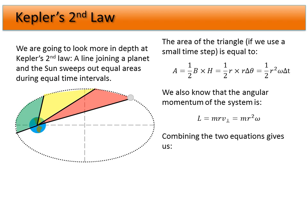We combine these two equations and look at what's similar. We've got r squared and omega in the area equation, and r squared and omega in the angular momentum equation — the same r squared, the same omega. Combining the two, we see that the area is equal to the angular momentum times a factor of one half, divided by the mass, times time. So area over delta t — the amount of area swept out per unit time — equals L over 2m.